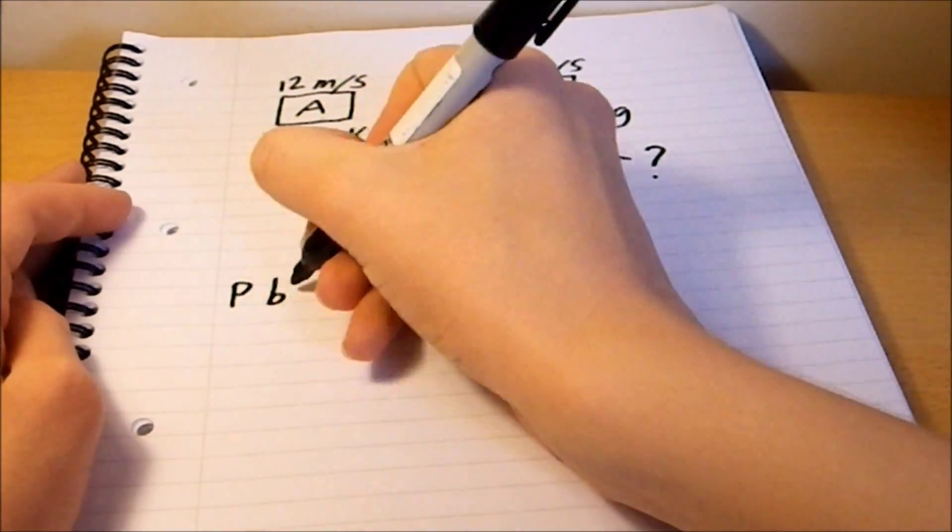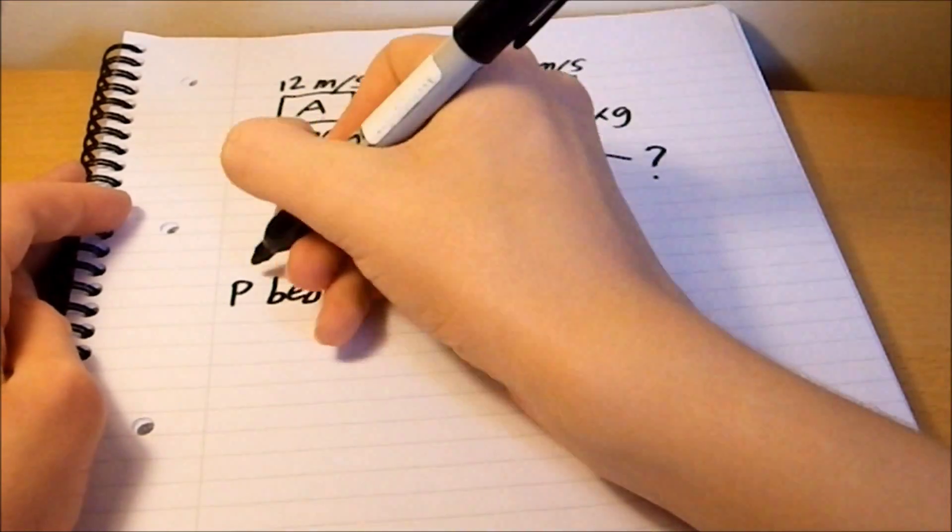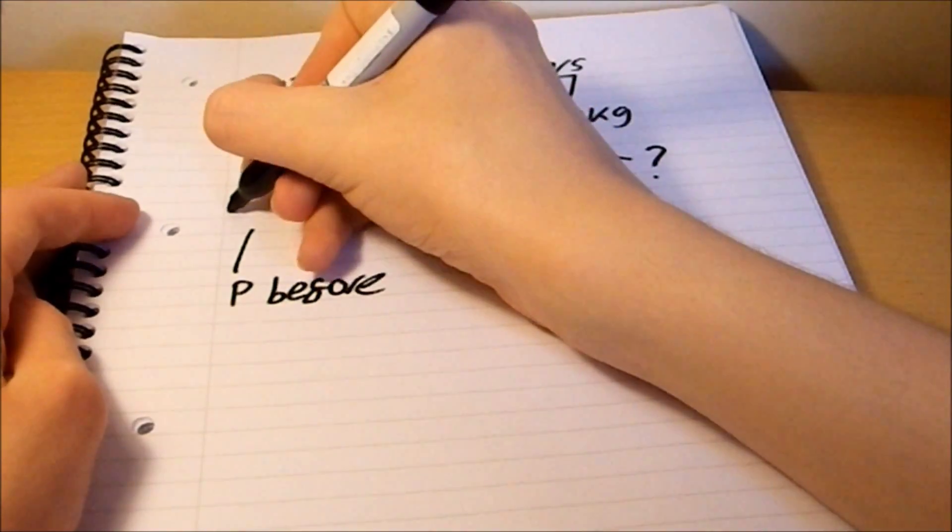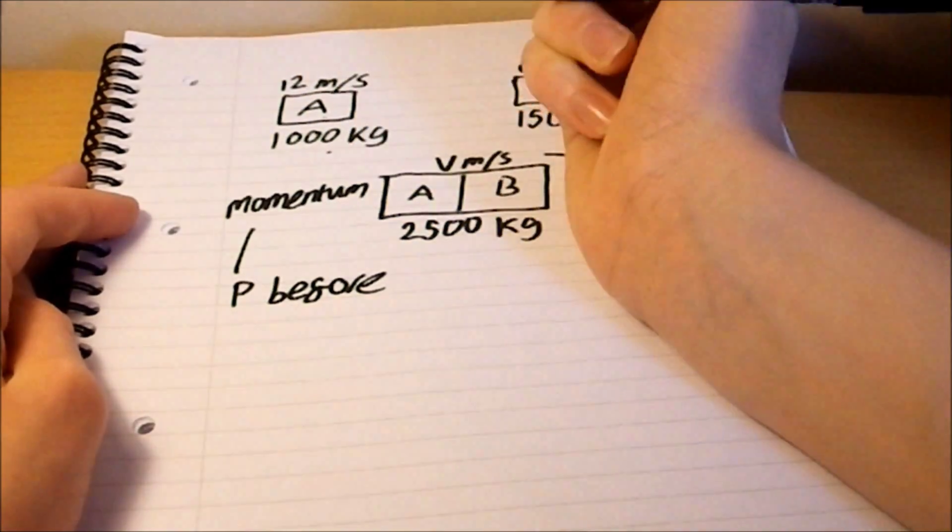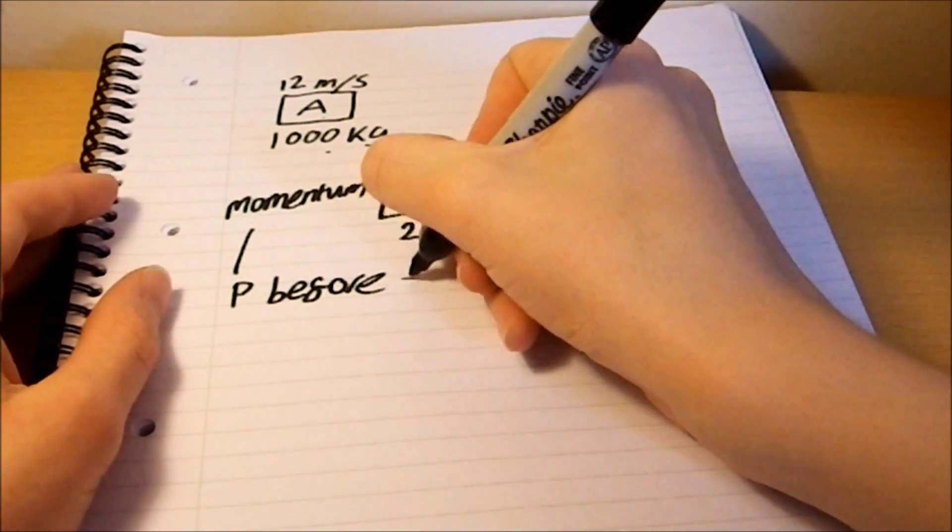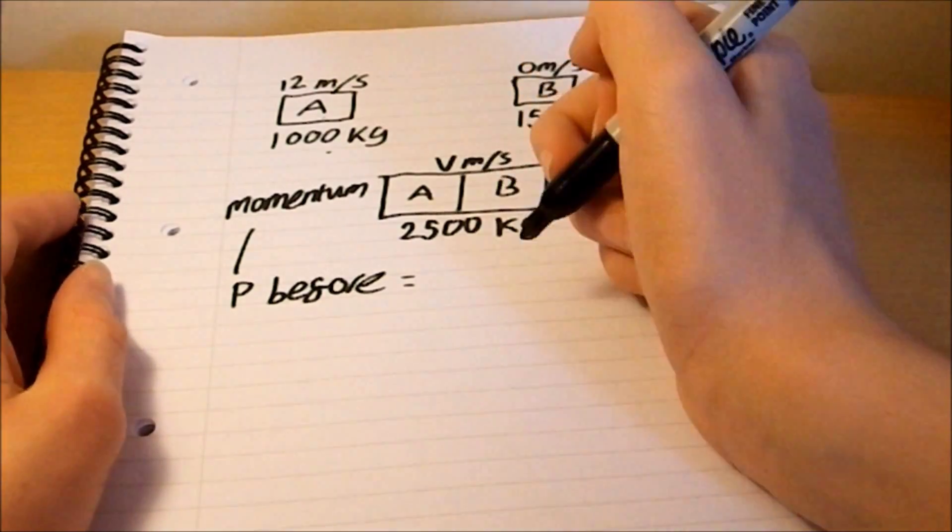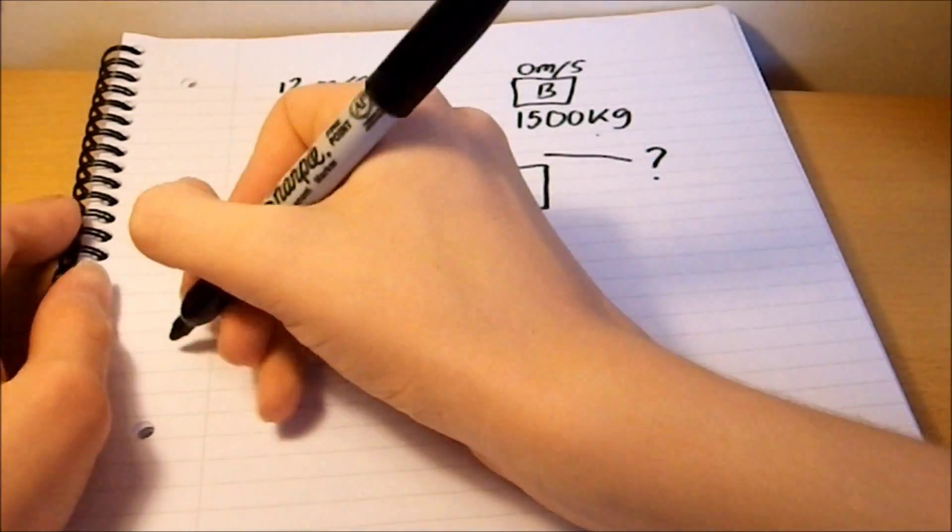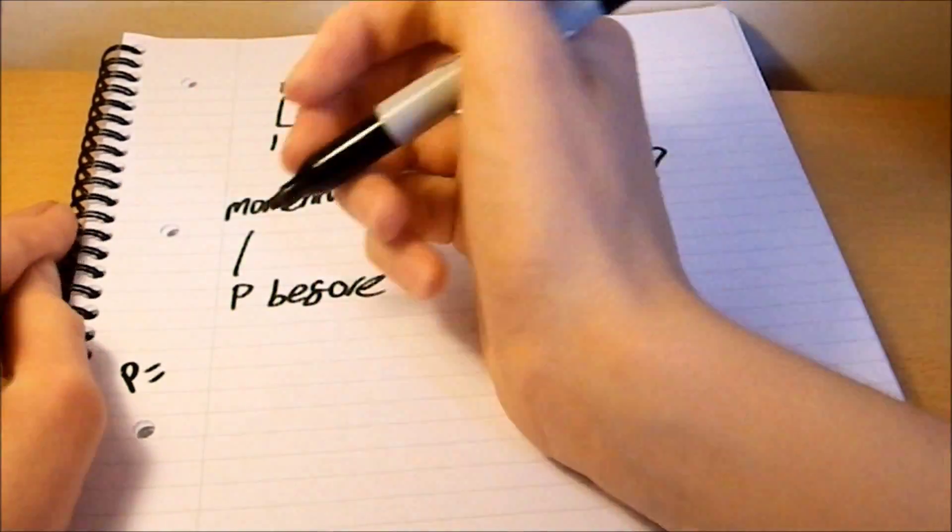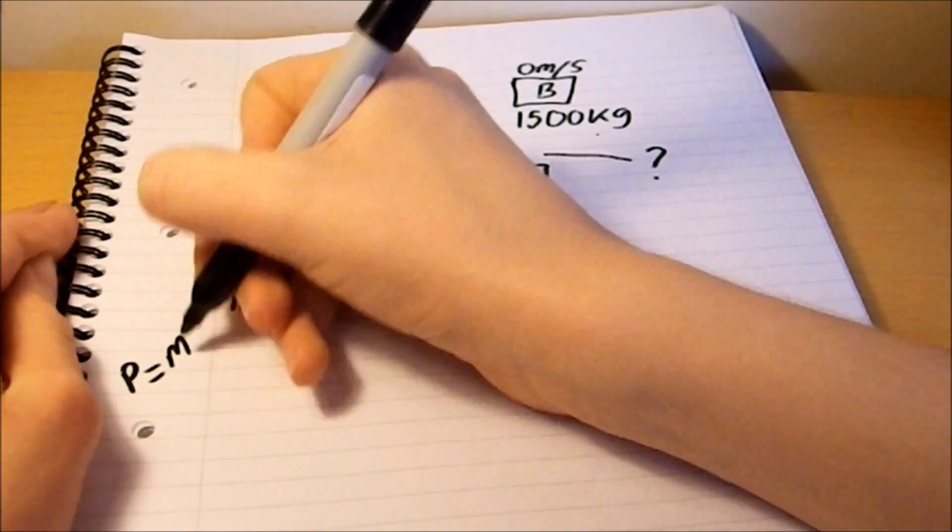Well, we can work out V by working out the P before. But what's P? P is the momentum of the vehicle. Now, how do we work out momentum? We use the equation P equals mV.